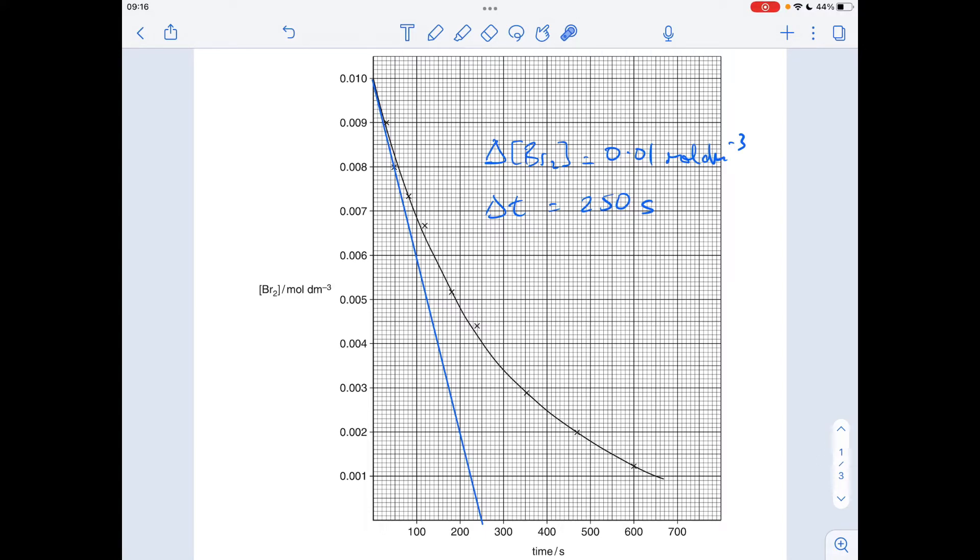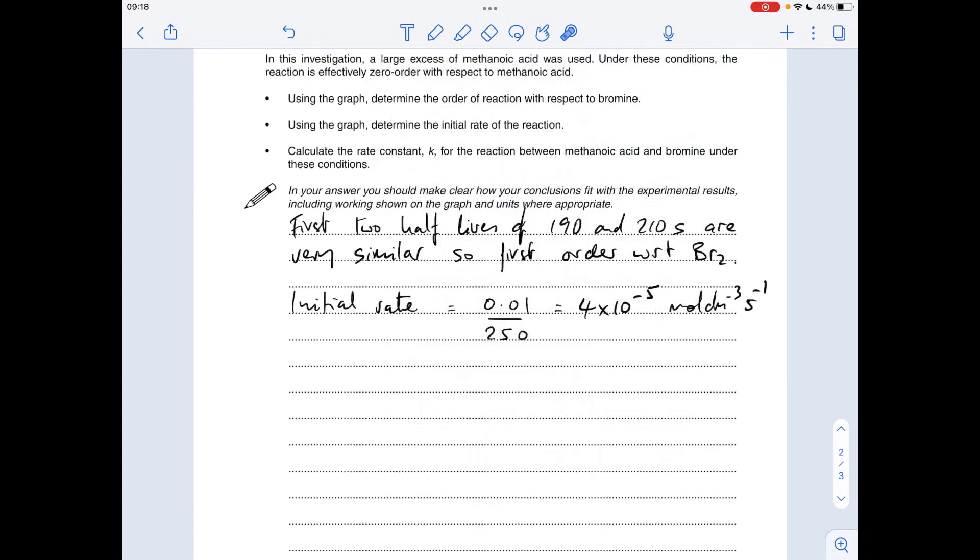So the gradient, obviously the change in concentration over the change in time. So from my tangent, I'm getting an initial rate of 4 times 10 to the minus 5, and don't forget your units. Moles per decimeter cubed, obviously we divide moles per decimeter cubed by seconds, moles per decimeter cubed per second.